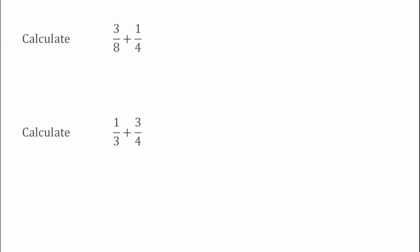For this first example we've got 3 over 8 add 1 over 4. I'll take a look at my denominators — I've got 8 and 4, so my lowest common multiple of 8 and 4 is actually 8. So we can turn both these fractions into fractions over 8. Because our first fraction is already over 8, we're going to keep 3 over 8 as 3 over 8.